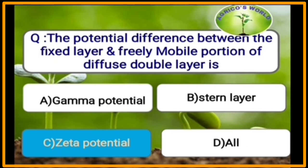Zeta potential is the potential difference between the fixed layer and the freely mobile portion of the diffuse double layer.